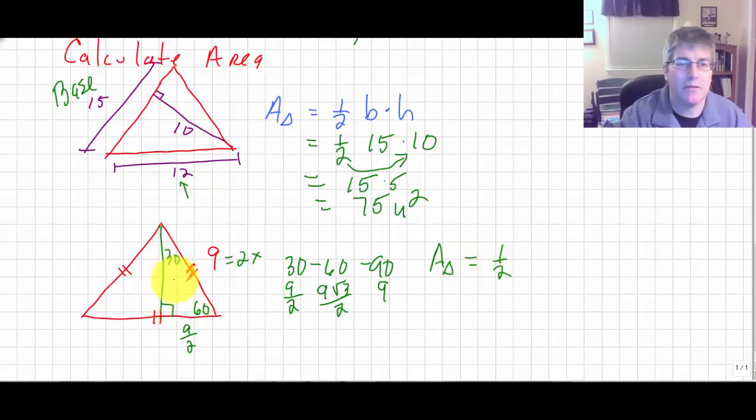Now the base, you've got to be careful here, our base is that whole length of 9, 1 half 9, times our height, 9 halves square root 3.